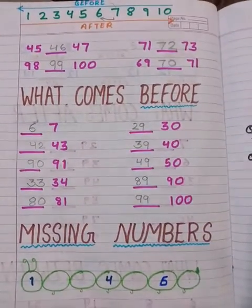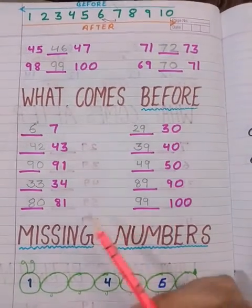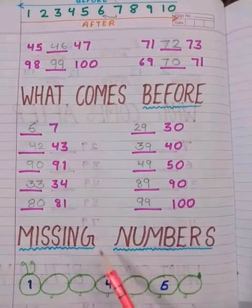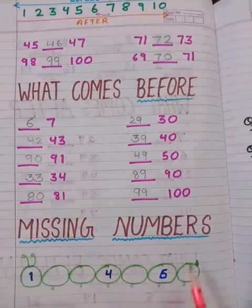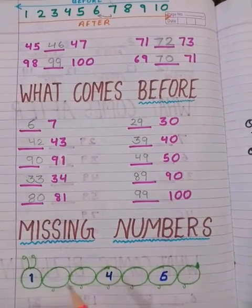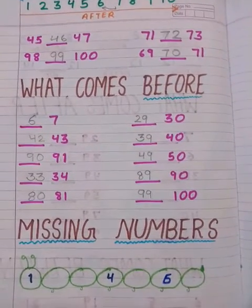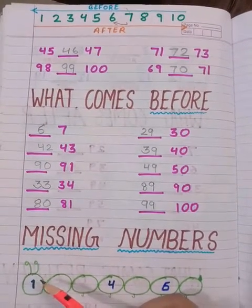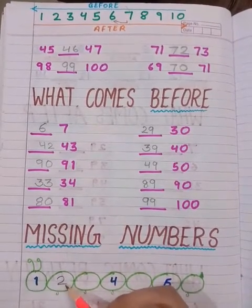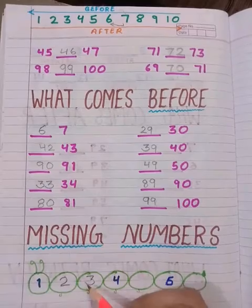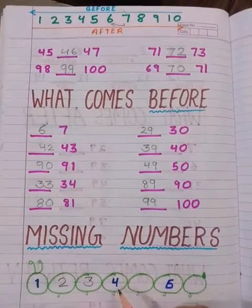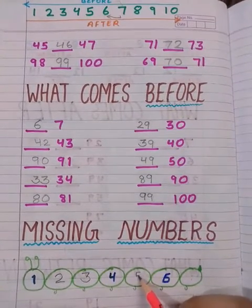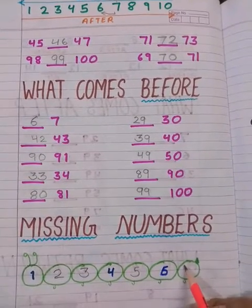Children, I have another very interesting activity for you. That is missing numbers. What are missing numbers? Jo numbers miss ho rahe hai, hame unhe find karna hai. So I made a caterpillar for you. Here are few segments of this caterpillar. Number of first segment is 1. What is next to 1? 2. What comes after 2? 3. Then 4. Here is 4, here is 6. What comes between 4 and 6? 5. Very good. 5, 6, and then 7.